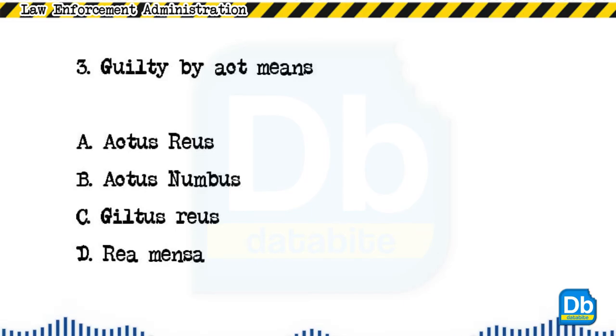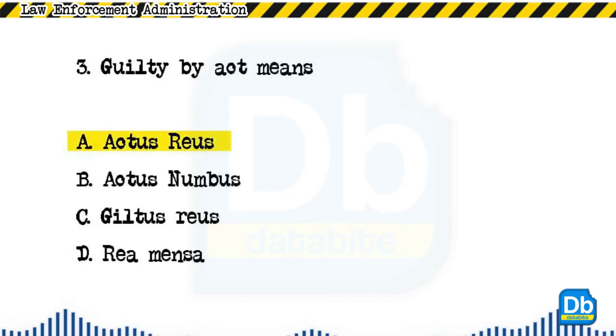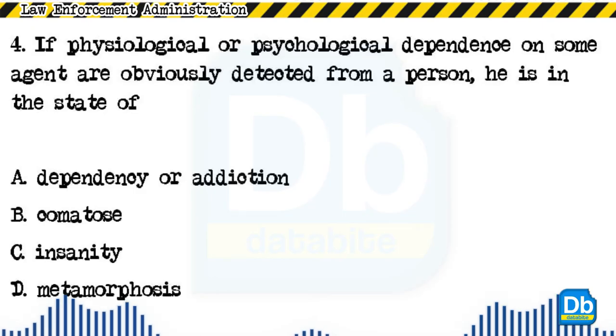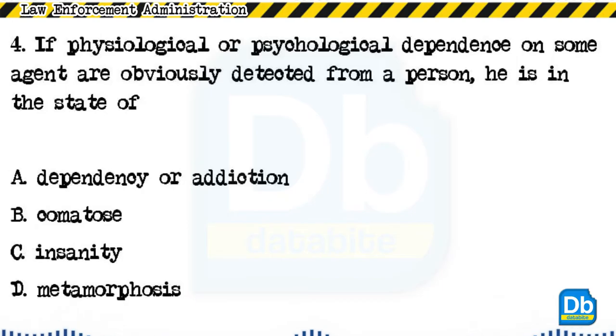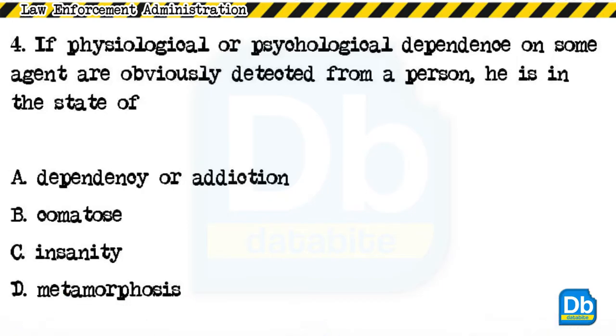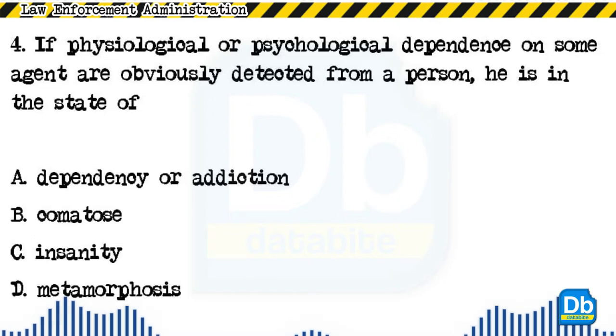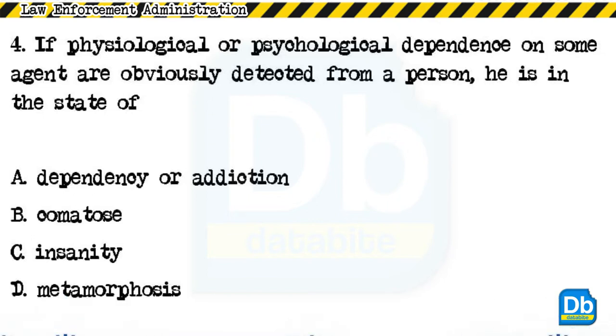Question 3: Guilty by act means: a) actus reus, b) actus numbus, c) guiltus reus, d) ray mensa. The answer is A, actus reus. Question 4: If physiological or psychological dependence on some agent is obviously detected from a person, he is in the state of: a) dependency or addiction, b) comatose, c) insanity, d) metamorphosis.